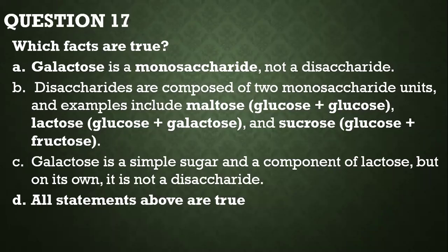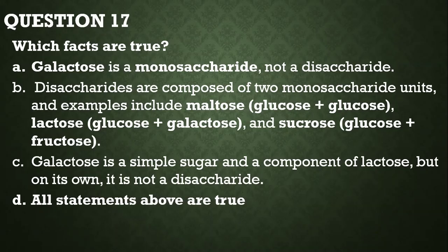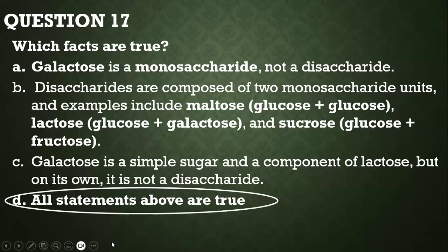Question number seventeen: which facts are true? A — galactose is a monosaccharide, not a disaccharide — true. Glucose and fructose are also monosaccharides. B — disaccharides are composed of two monosaccharide units; for example, maltose is glucose plus glucose, lactose is glucose plus galactose, and sucrose is glucose plus fructose. C — galactose is a simple sugar and a component of lactose, but on its own it is not a disaccharide. All the statements are true.